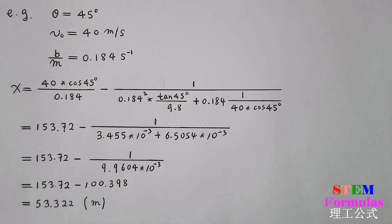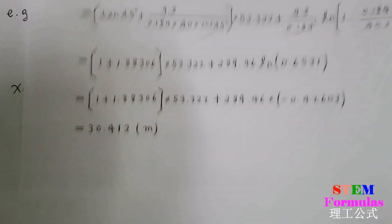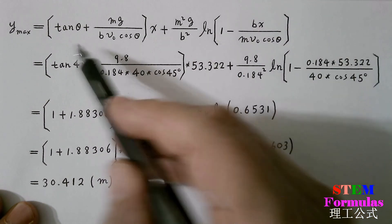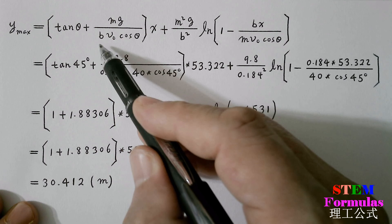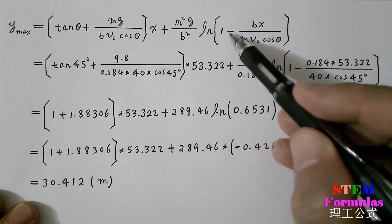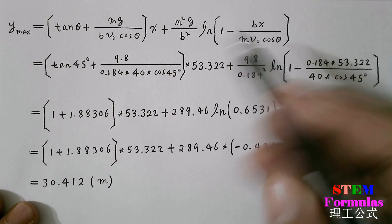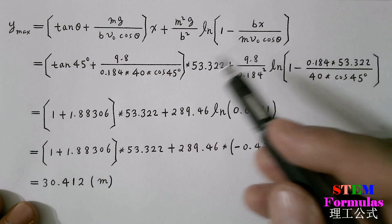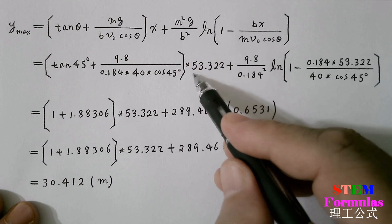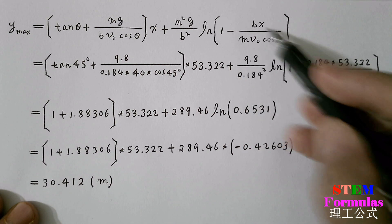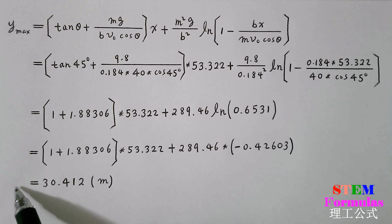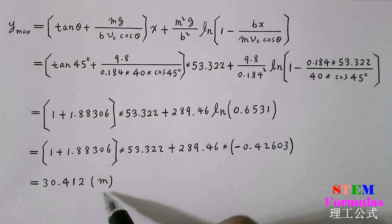Once we find x, we substitute it into the trajectory equation to find ymax. So ymax equals tanθ times x plus mg divided by (b·v₀cosθ) times x plus m²g divided by b² times the logarithm of [1 minus bx divided by (mv₀cosθ)]. We substitute all values, using x equal to 53.322 meters. After evaluating all quantities, we get ymax equal to 30.412 meters.